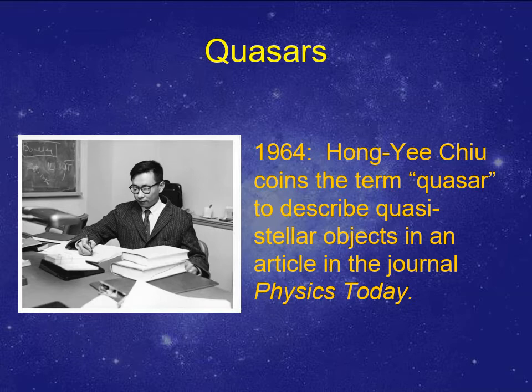In 1964, physicist Chu was writing an article about these quasi-stellar objects in the periodical Physics Today. He decided that writing 'quasi-stellar object' over and over again was too cumbersome, so he came up with the term 'quasar' to describe these things.